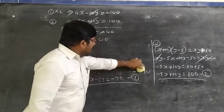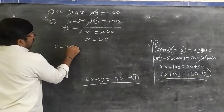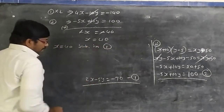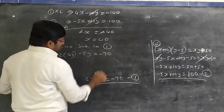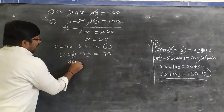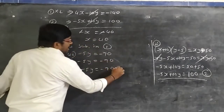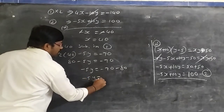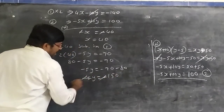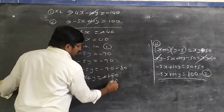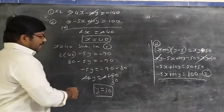Substituting x = 40 into equation 1: 2(40) − 5y = −70, so 80 − 5y = −70, giving −5y = −70 − 80 = −150, so y = 30.